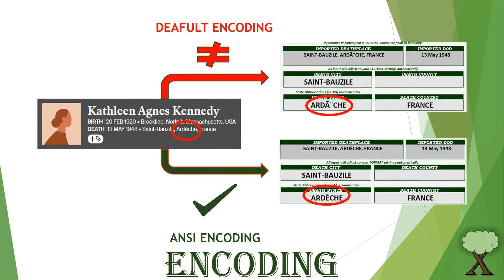Before importing, it is recommended to switch the encoding of the GEDCOM file to ANSI. For reasons unbeknown to me, this encoding allows diacritical marks like accents and tildes to show up properly in Excel. How you switch the encoding depends on the text editor software used to edit the GEDCOM.